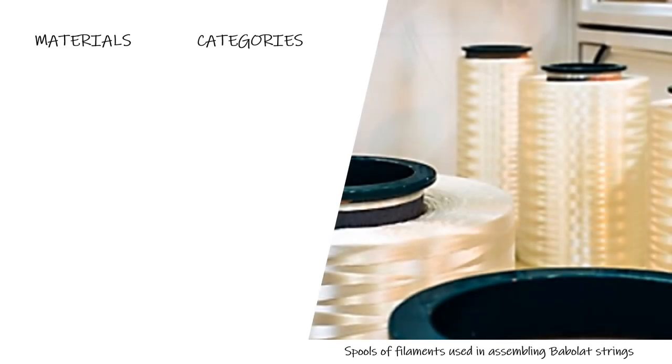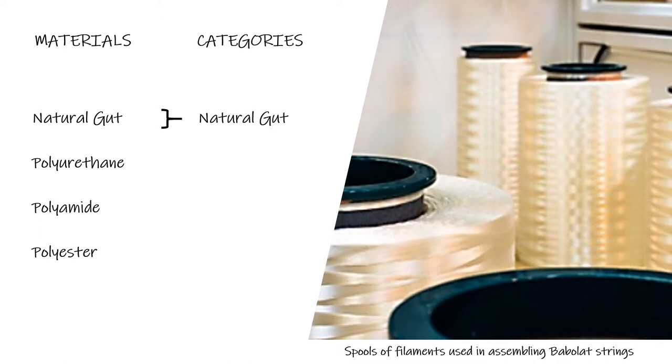The main raw materials for making racket strings are natural gut, polyurethane, polyamide, and polyester. These materials are used to create the two categories of strings: natural gut and synthetic.